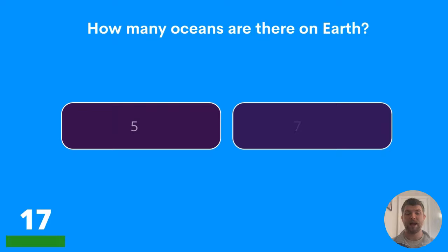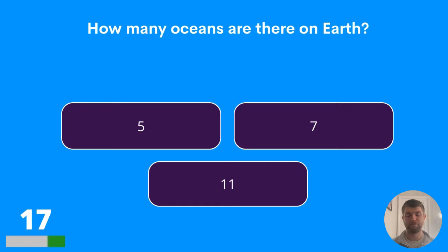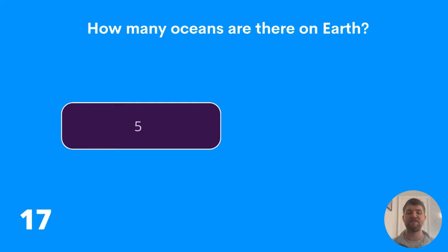Question seventeen: how many oceans are there on earth? Are there five, seven, or eleven? There are five oceans on earth.